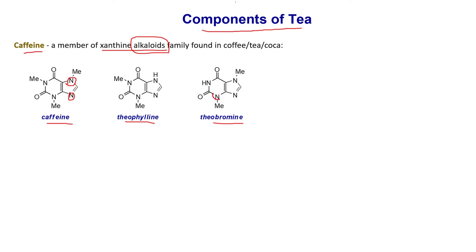If you look at the structures, they all have nitrogens on them. Caffeine has three degrees of methylation. Theophylline has two methylation groups, and theobromine also has two but in a different position. They all belong to the xanthine alkaloids family.